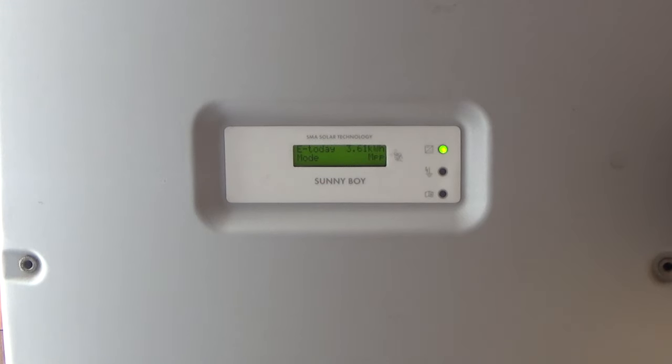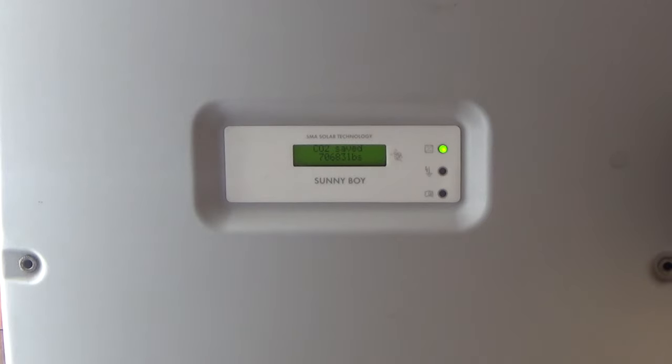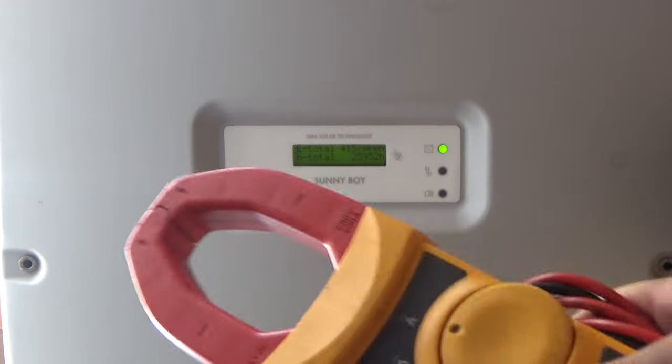Here I have my Sunny Boy Grid Tie Solar Inverter and it's running right now. And I want to use my clamp meter to measure the current that's coming into my inverter. And because my inverter is hardwired directly to my solar panel and the grid, the value here should be accurate. And I'm going to use that value as a standard to compare with my clamp meter to see if my clamp meter is accurate.